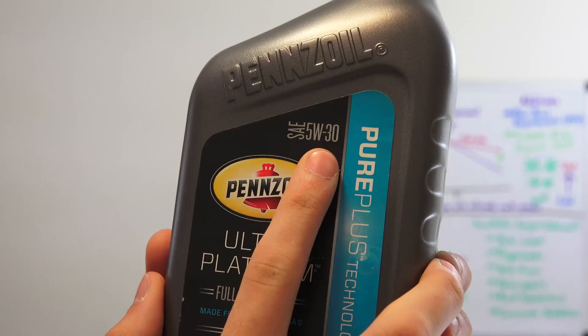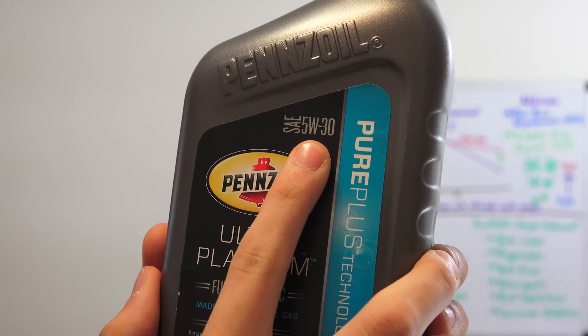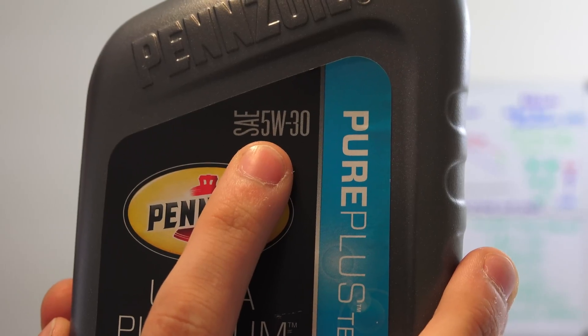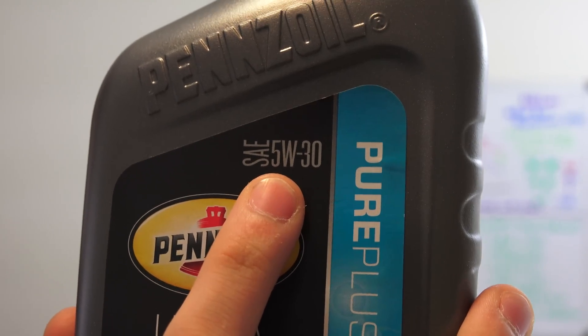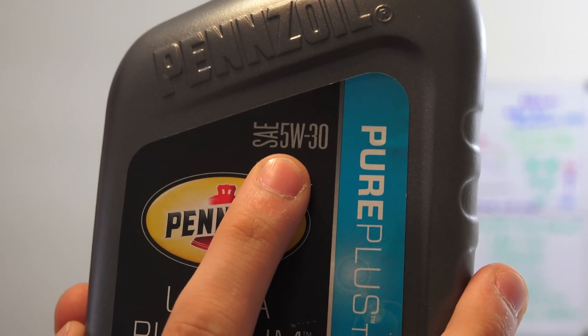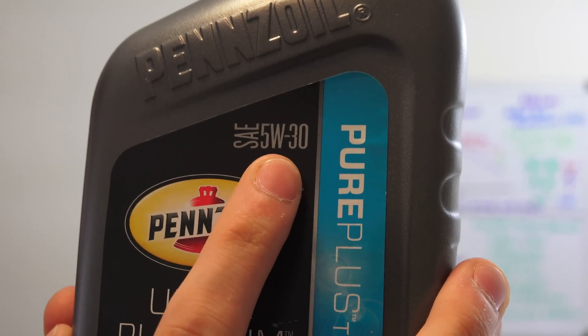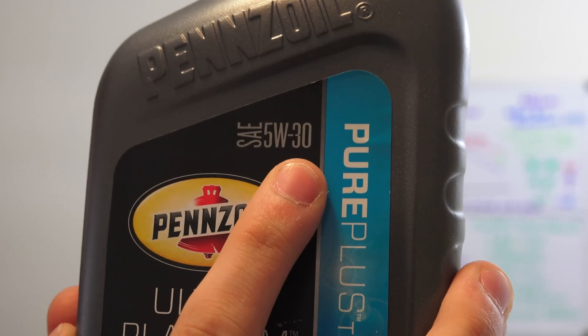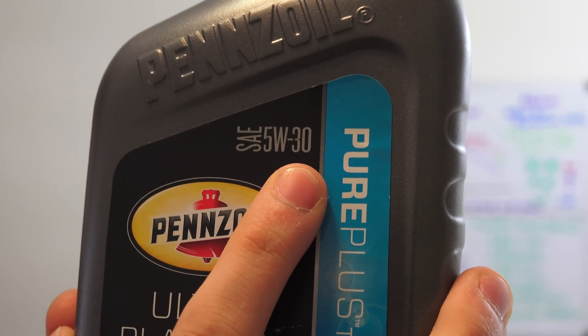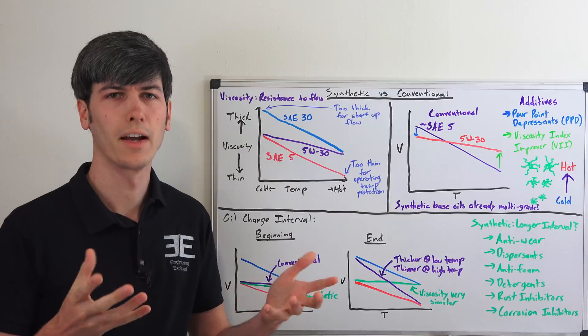You'll often hear 5W30 or 0W20 as a rating used in cars today. The first number followed by a W is the cold rating. W stands for winter and this means the oil behaves like an SAE 5 grade motor oil while cold but at operating temperatures at about 100 degrees Celsius it operates like an SAE 30 grade motor oil.